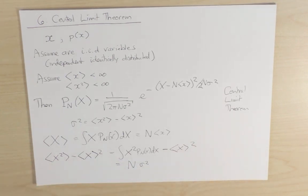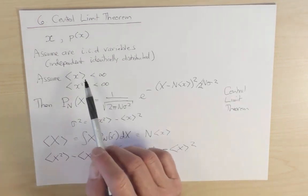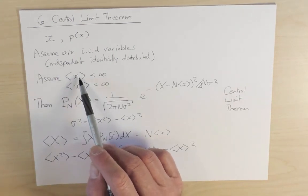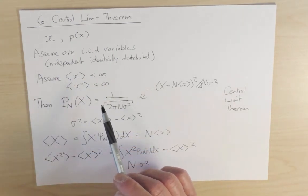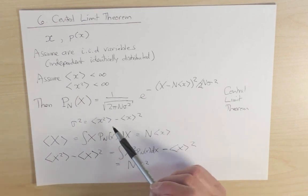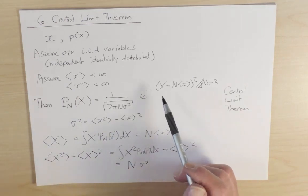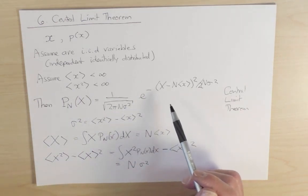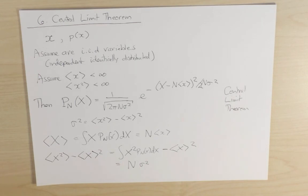So once we know the properties, once we know the first and second moments of the single step distribution are what they are, then we know that the distribution of a random walk of n steps is given by a Gaussian form, and from that we can compute any moment we want of the random walk itself.